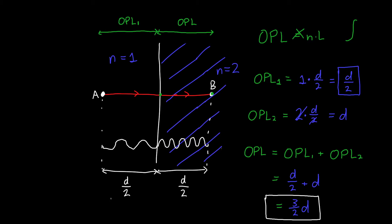The total physical distance the light traveled is just D — the same as in the last example — but the optical path length is larger because we fit more wavelengths into the same distance due to the higher refractive index. This is also a reminder that optical path length is a length — it's measured in meters or units of distance; it's not a unitless number.